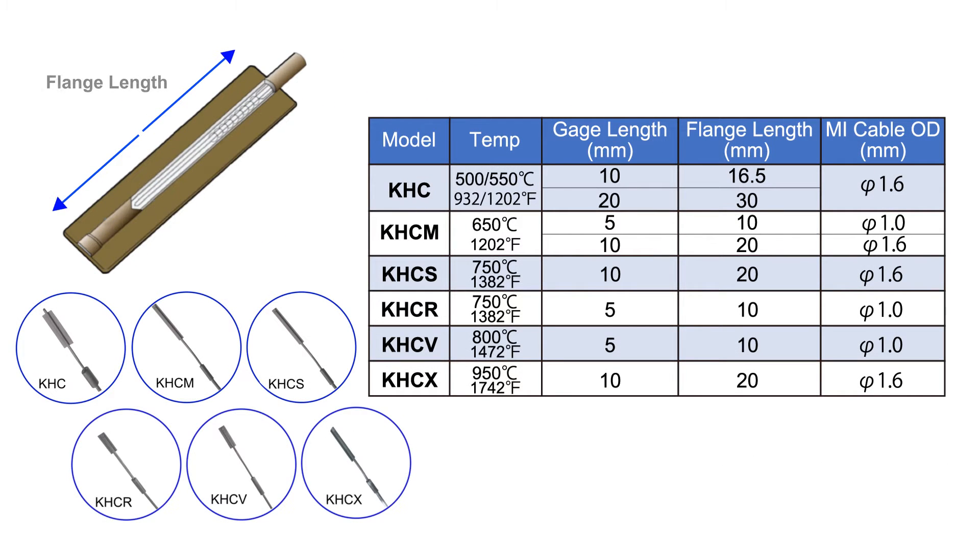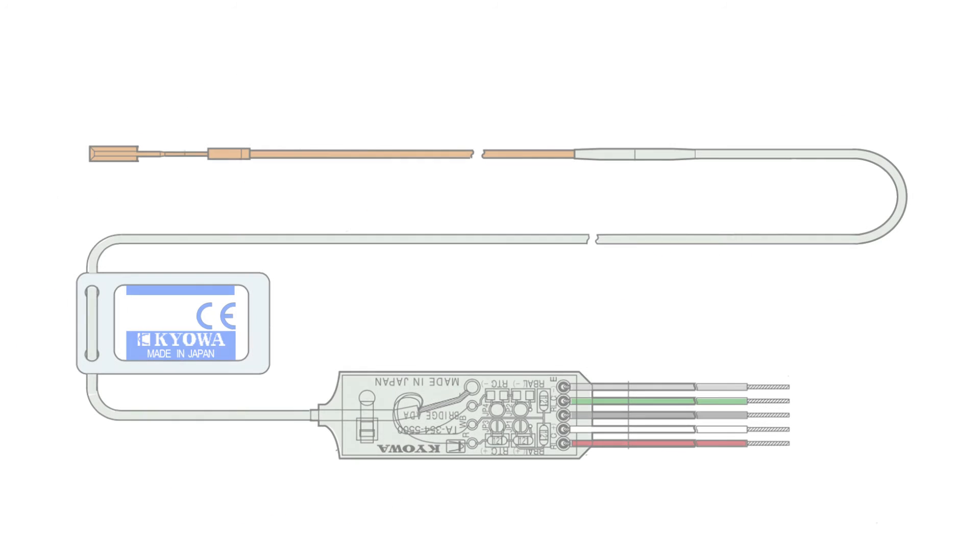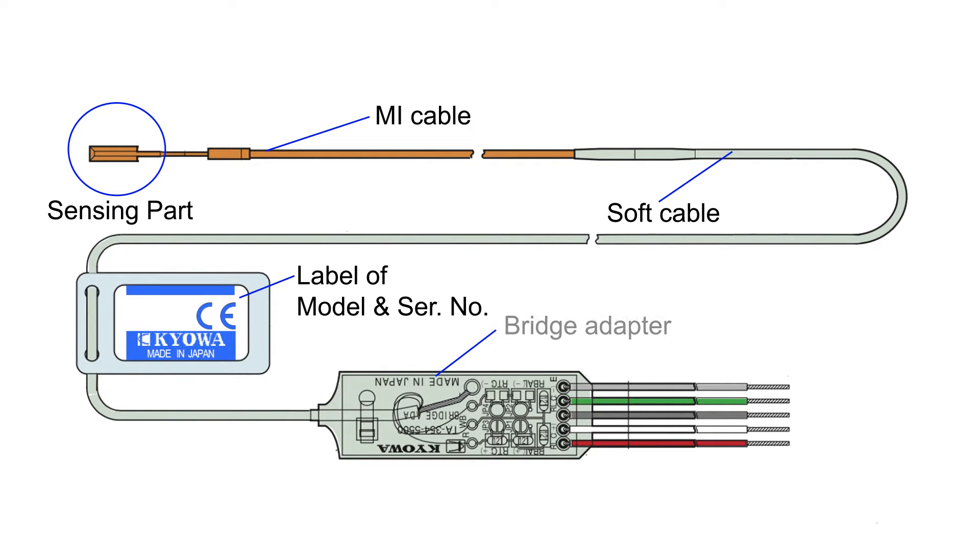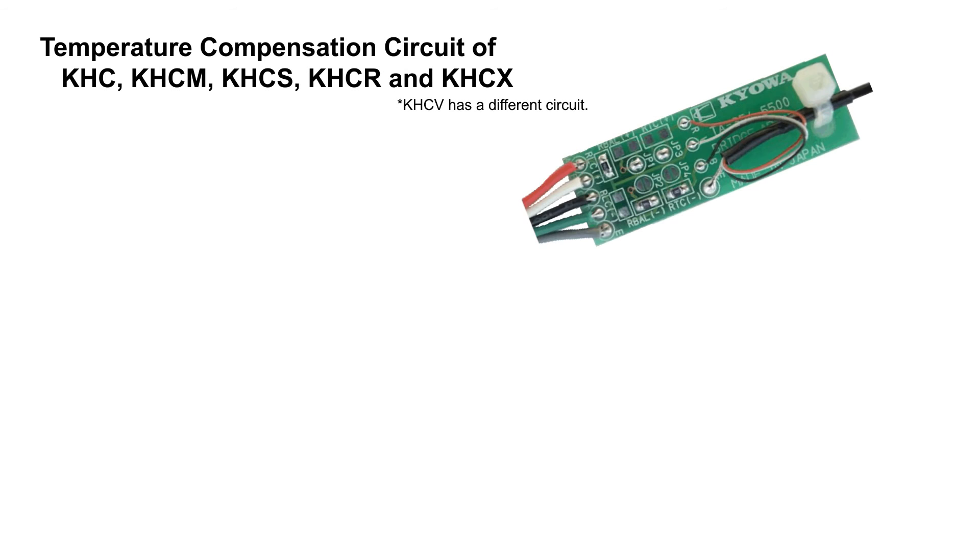Three gauge and flange lengths are available depending on the model, which can help with smaller spaces. The measurement sensor consists of four parts: the active sensor element, up to 30 meters of insulated metal sheath cable, the soft extension cable with a permanent label, and the bridge adapter to complete the circuit arrangement.